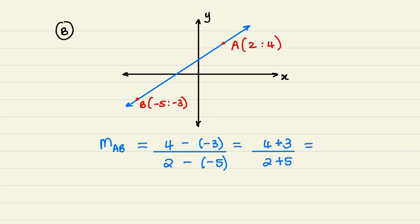Therefore, the gradient is 7 over 7 and that is equal to 1. So the gradient between points a and b is equal to 1.